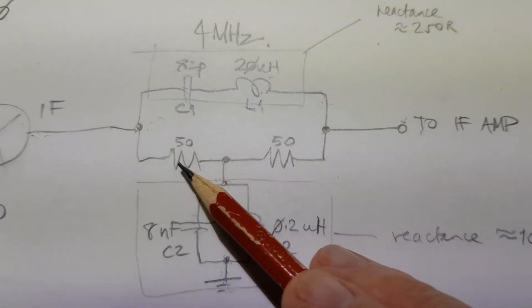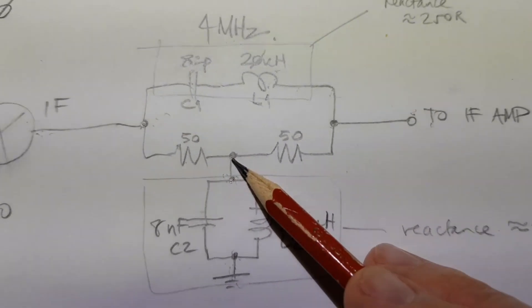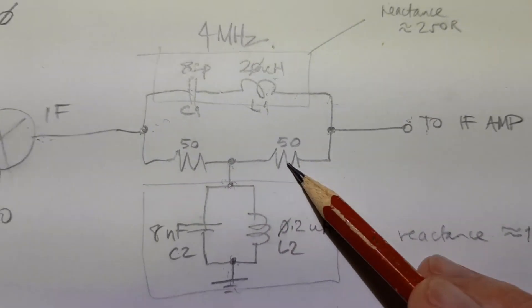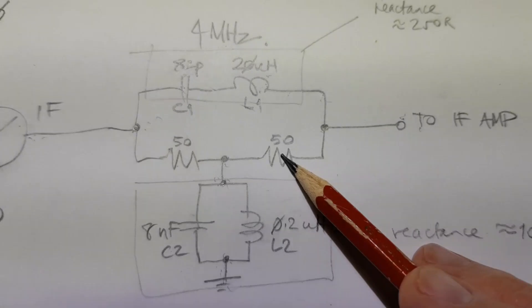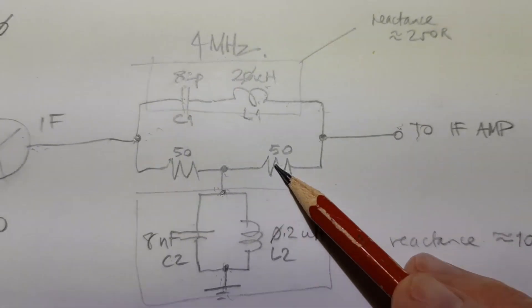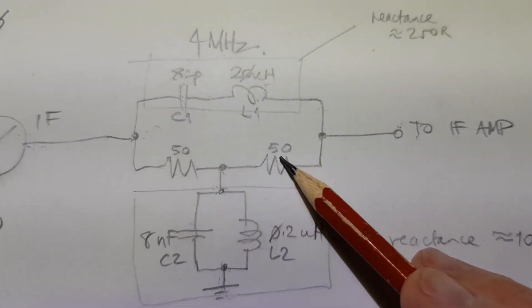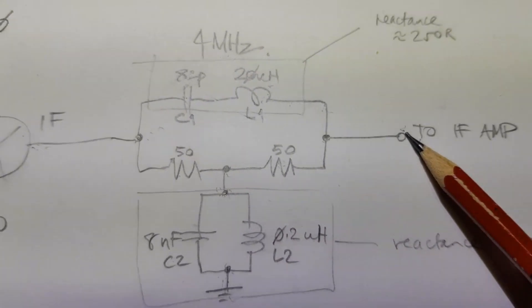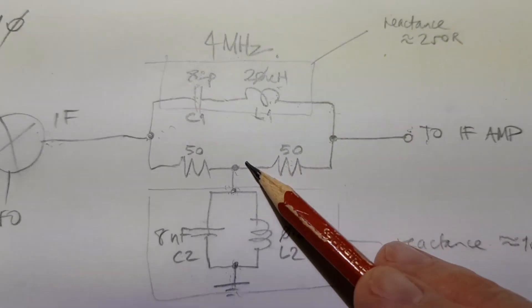Now the nice property about this symmetrical bridged-T diplexer is that this resistor on the right presents a 50 ohm load, non-reactive load, to the input of the following stage at all frequencies other than the intermediate frequency.